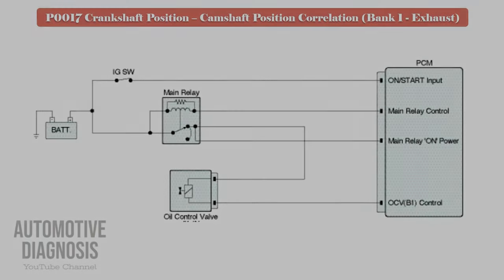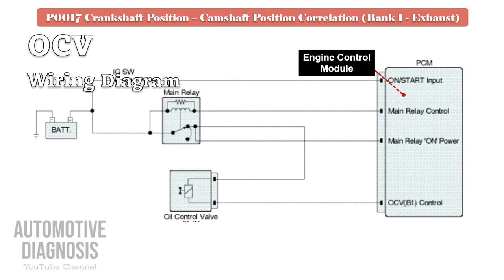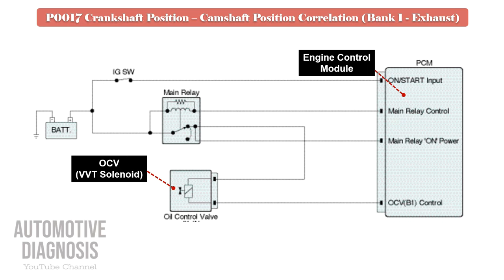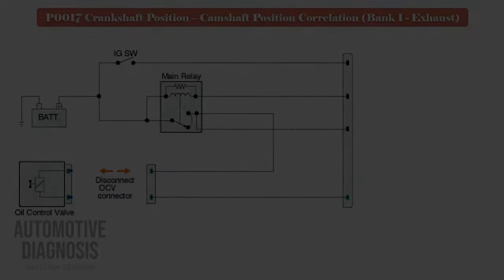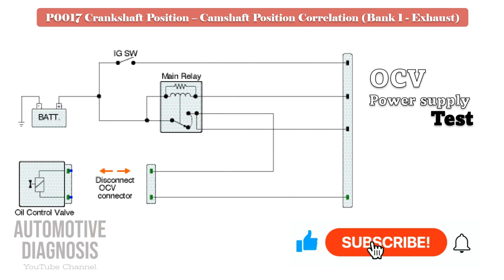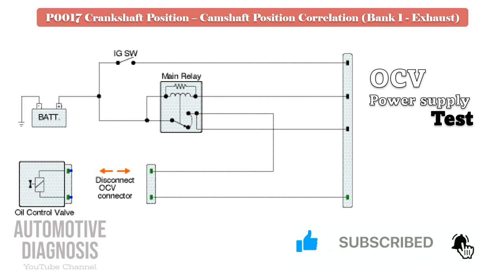As soon as you turn on the ignition switch, power supply will be provided to the OCV via the engine main relay, so you must have battery voltage on that pin when ignition is on or when the engine is running. Also, the OCV is controlled by the PCM using the other wire, so the control line must be checked too. For testing the OCV power supply voltage, turn the ignition on with the bank one intake OCV connector disconnected, then check the supply voltage using a multimeter on the relevant pin. You must measure battery voltage on the multimeter.